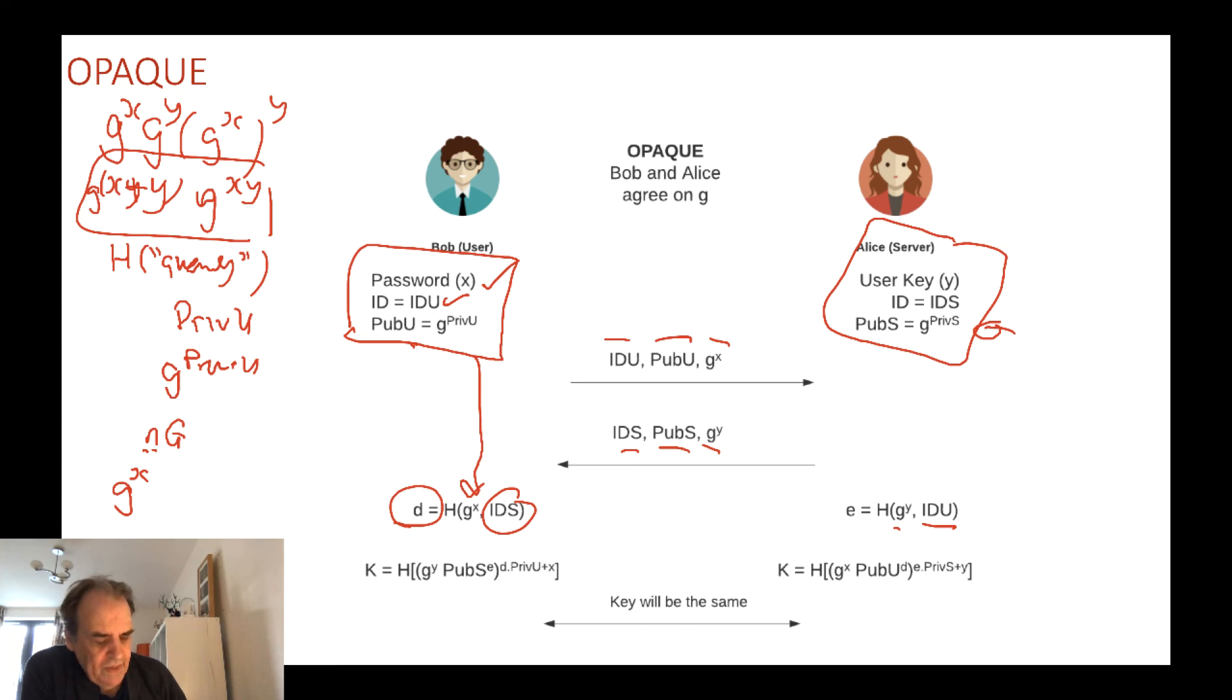Then we take G to the power of Y, multiply it by the public key to the power of E, and all of that to the power of this. So Bob knows that he knows that and he knows the other things there, so he's just received that from there and he will be able to calculate that. And in the end that should be the same as what Alice has generated.